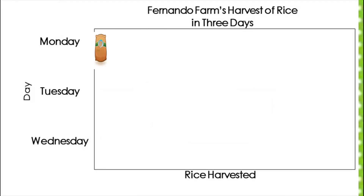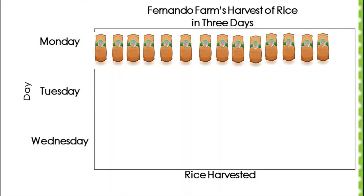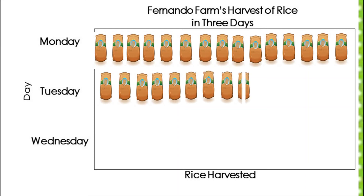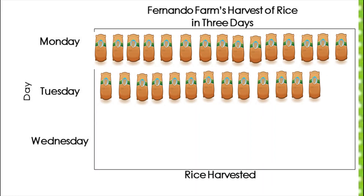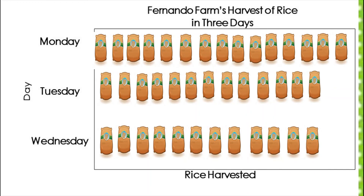For day 1 (Monday), there are 15 sack symbols, and 15 times 10 equals 150. For day 2 (Tuesday), there are 13 sack symbols, representing 130 sacks. For day 3 (Wednesday), there are 12 sack symbols, and 12 times 10 equals 120.